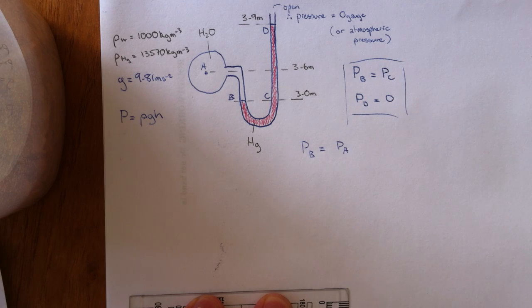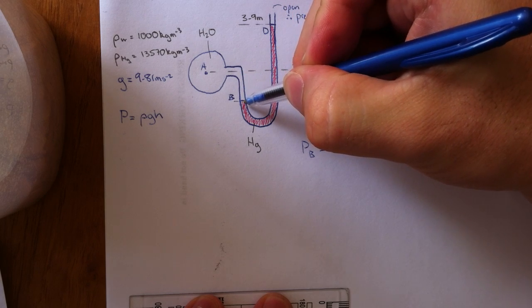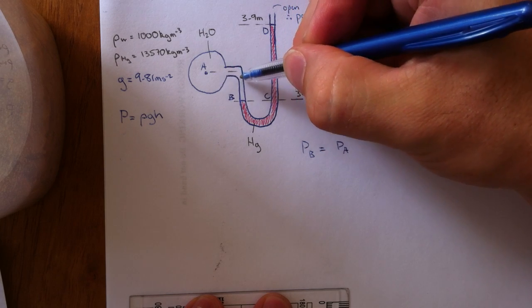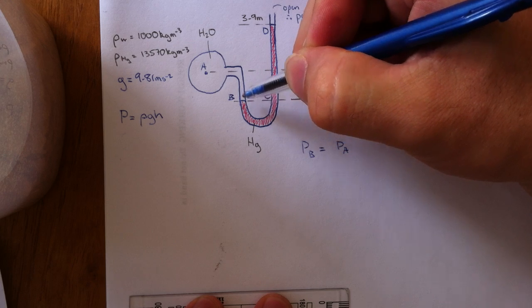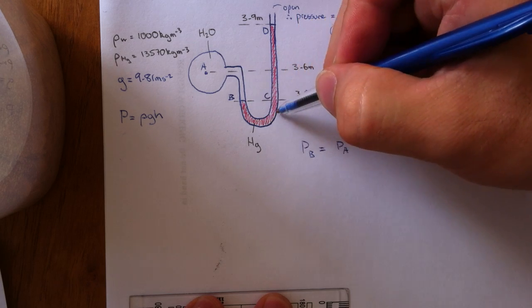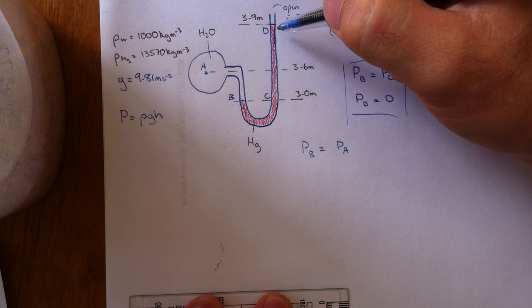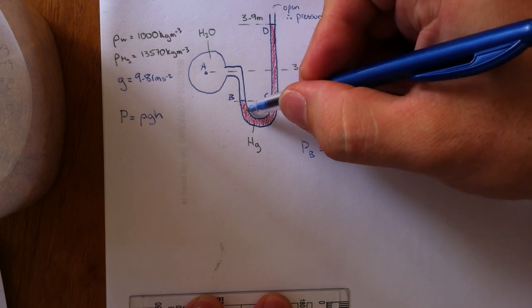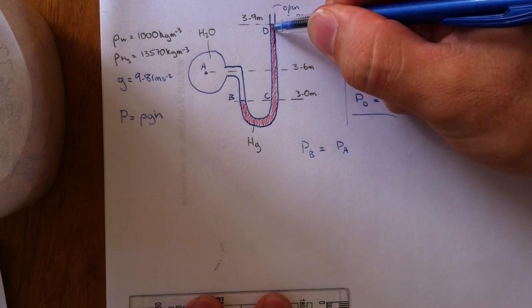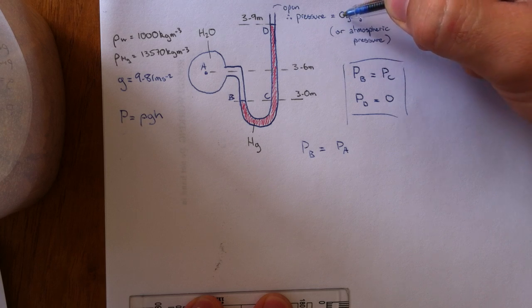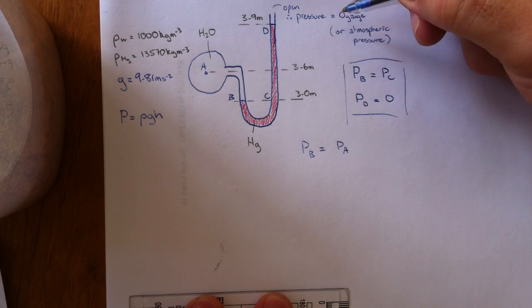An important principle is when you're going down in a liquid the pressure increases, just like diving down in a swimming pool the pressure increases the closer you get to the bottom. And when you go up the pressure decreases, decreases right up to gauge 0 or atmospheric pressure.